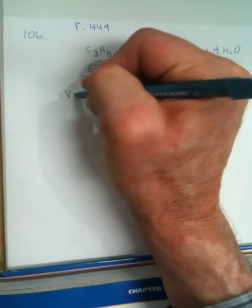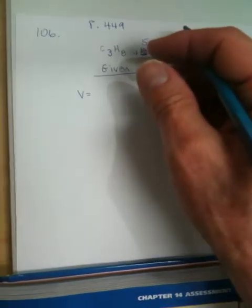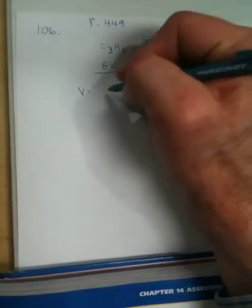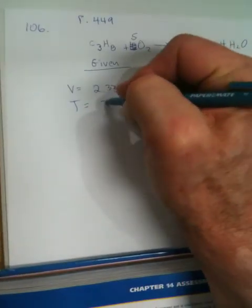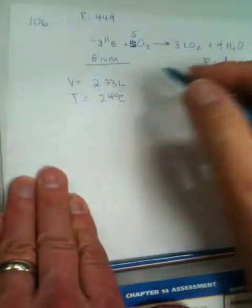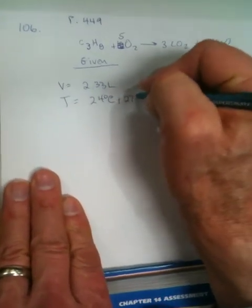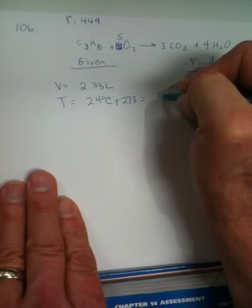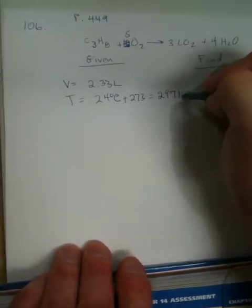So, we've got volume is equal to 2.33 liters, and our temperature is equal to 24 degrees centigrade. And what do we have to do to get that so it will work in the formula? Add 273. Yeah, add 273. And that gets us into kelvins, which gives us 297. And that's going to be our kelvins.